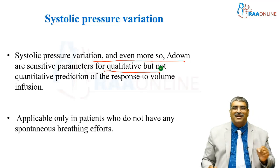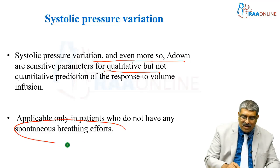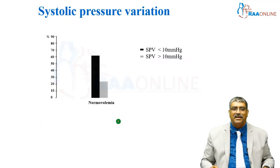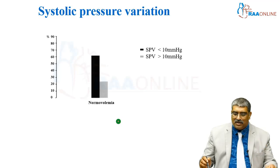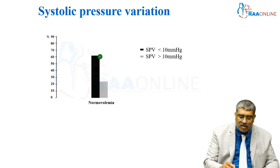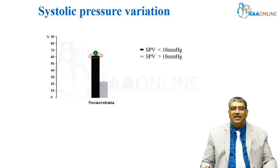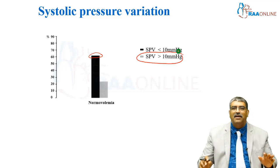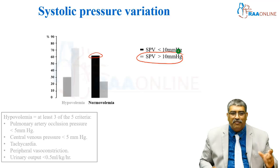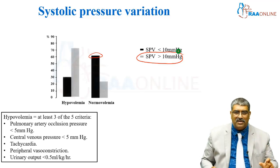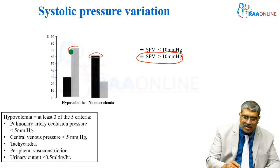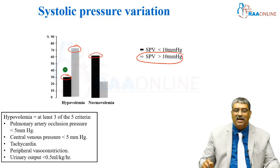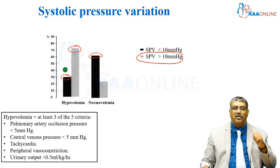It does not apply to spontaneously breathing patients. The patient has to be mechanically ventilated. In normal volume patients, the systolic pressure variation is around 25 to 30 percent and can be greater than 10 millimeter of mercury. But if hypovolemia is present, more than 70 percent will have a greater systolic pressure variation, and around 30 percent will have less than 10 millimeter of mercury variation.